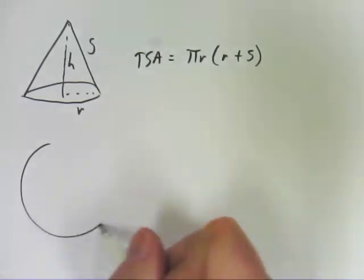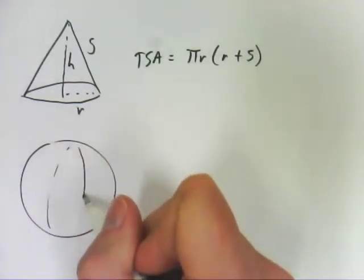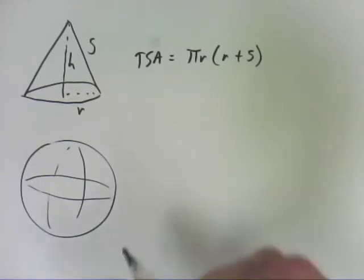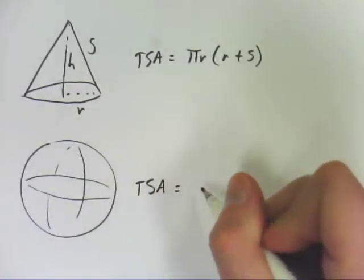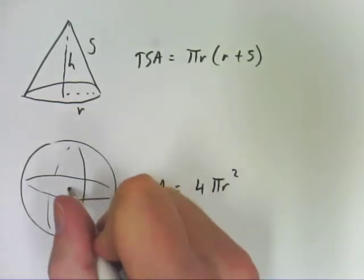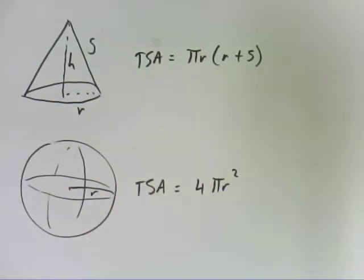And if you have a sphere, the total surface area of that, and again, this is one you're just going to have to remember, is 4 pi r squared, where r is the radius.